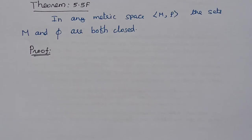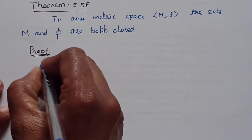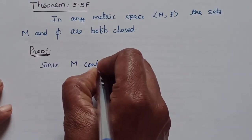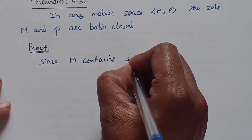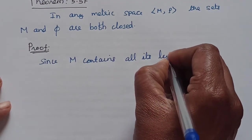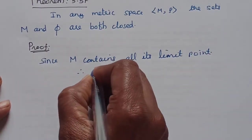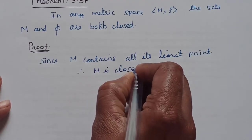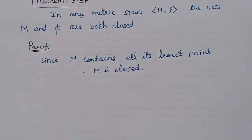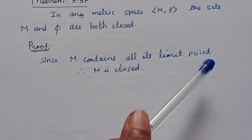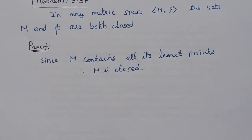The definition of a closed set is: a set is closed if it contains all its limit points. Now, the metric space M contains all its limit points. Since M contains all its limit points, therefore M is closed. To prove that the entire metric space M is closed: since M contains all its limit points, therefore M is closed.